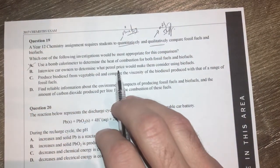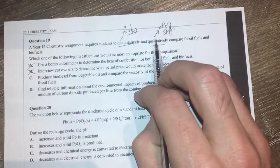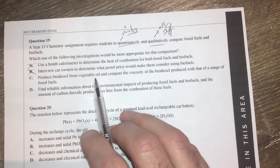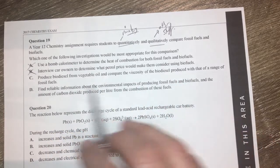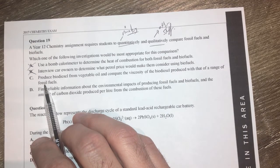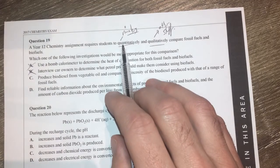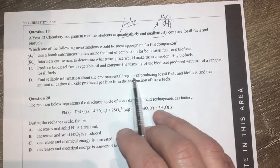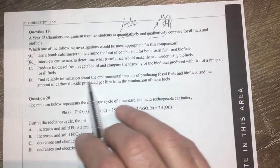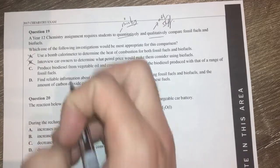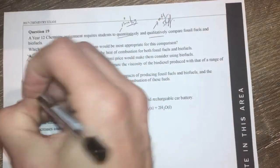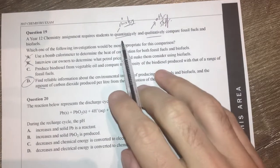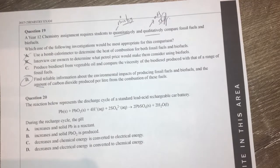Interview car owners about petrol price and make them consider that's going to be your qualitative really. You're not going to get hard numbers out of that because you're just going to talk to them. Produce biodiesel from vegetable oil and compare the viscosity of the biodiesel produced with that of a range of fossil fuels. Comparing viscosity you could probably get quantitative or qualitative. Find reliable information about the environmental impacts of producing fossil fuels and biofuels. That's going to be your qualitative where you're finding information. And the amount being quantitative carbon dioxide per litre, D is going to be our option here that we will like. This one here, this is only going to give you one bit of information. I think D is the best option there for that one.